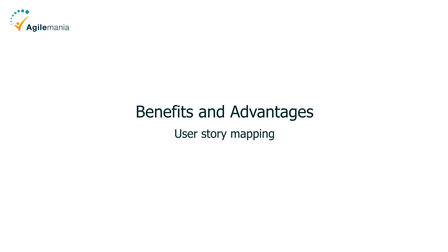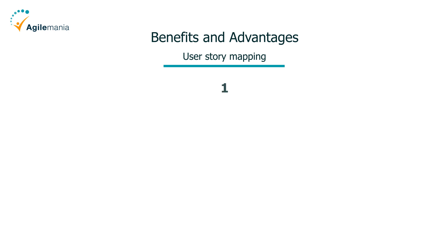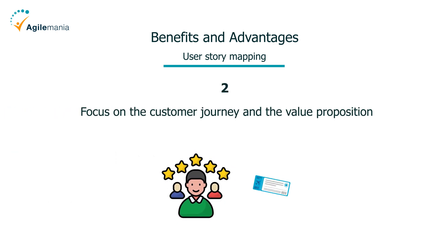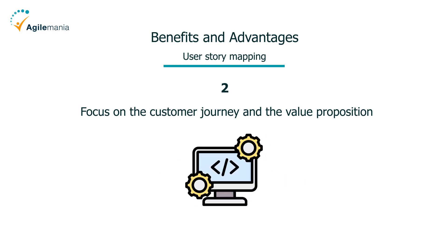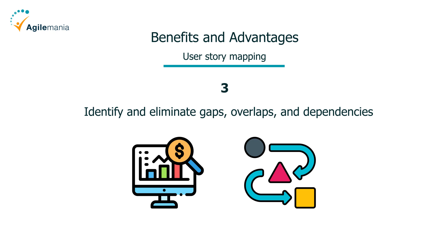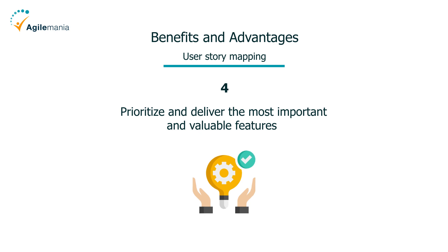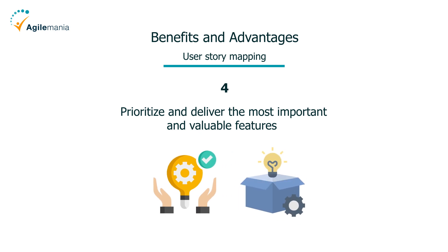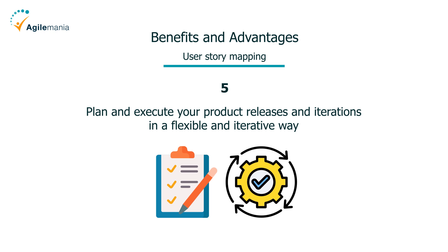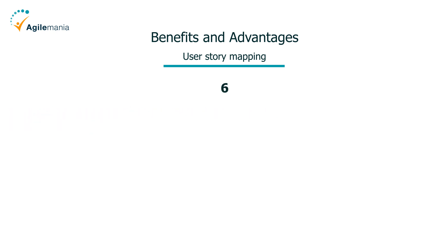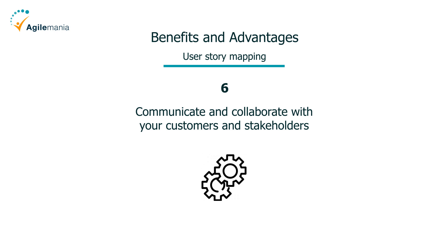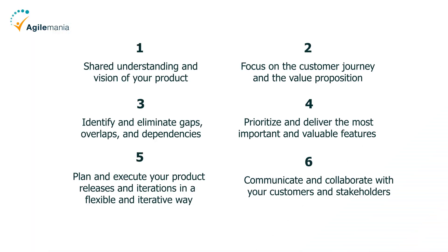Now let's talk about some of the benefits and advantages of using user story mapping. First, it helps you create a shared understanding and vision of your product among your team and stakeholders. Next, it helps you focus on the customer journey and the value proposition of your product, not just the technical details and specifications. It helps you identify and eliminate gaps, overlaps, and dependencies in your product backlog. It helps you prioritize and deliver the most important and valuable features first, while deferring or discarding the less important ones. It helps you plan and execute your product releases and iterations in a flexible and iterative way based on feedback and data. And last but not least, it helps you communicate and collaborate with your customers and stakeholders in a transparent and interactive way using a visual and easy-to-understand tool.